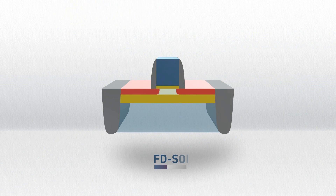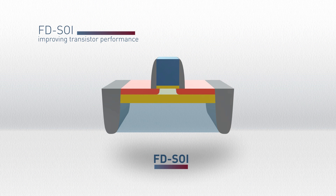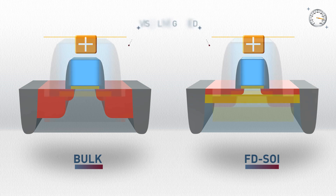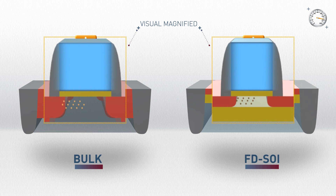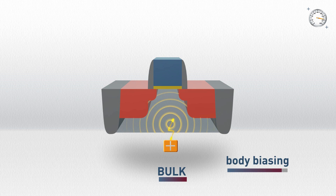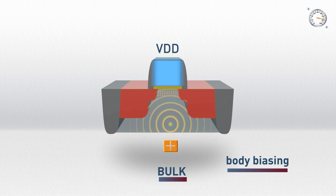So let's look at how FDSOI makes for better transistor performance. On the same technology node, the FDSOI transistor has a shorter effective channel compared to a bulk silicon implementation. The shorter channel reduces the time necessary for the electron flow from the source to the drain, leading to a faster transistor. In order to improve the transistor performance, a voltage can be applied to the substrate. This method, called body biasing, facilitates the creation of the channel between the source and the drain, resulting in faster switching of the transistor.